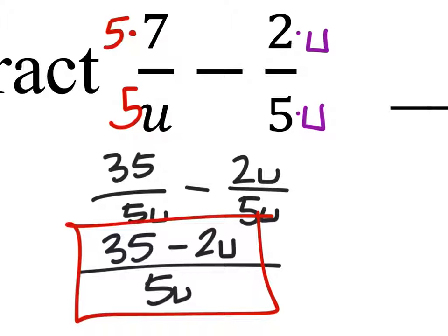Yeah, that's a great question there. See, this 35 and that negative 2U, they're not like terms because one has a U and one is not having a U.